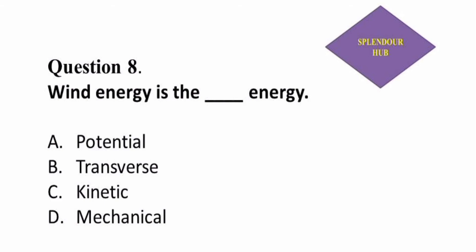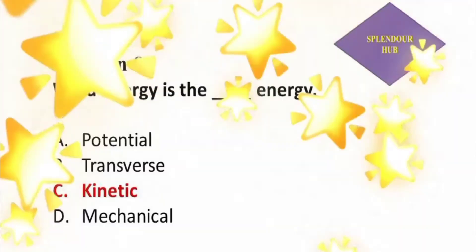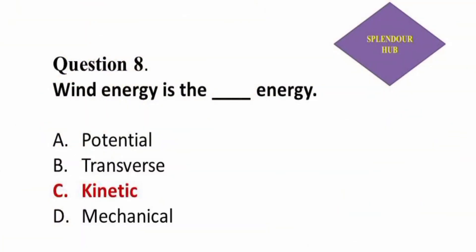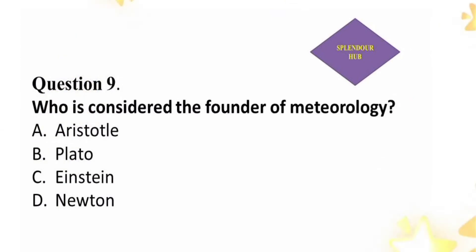Question 8: Wind energy is the dash energy — option A: potential, option B: transverse, option C: kinetic, option D: mechanical. Answer: Wind energy is the kinetic energy.